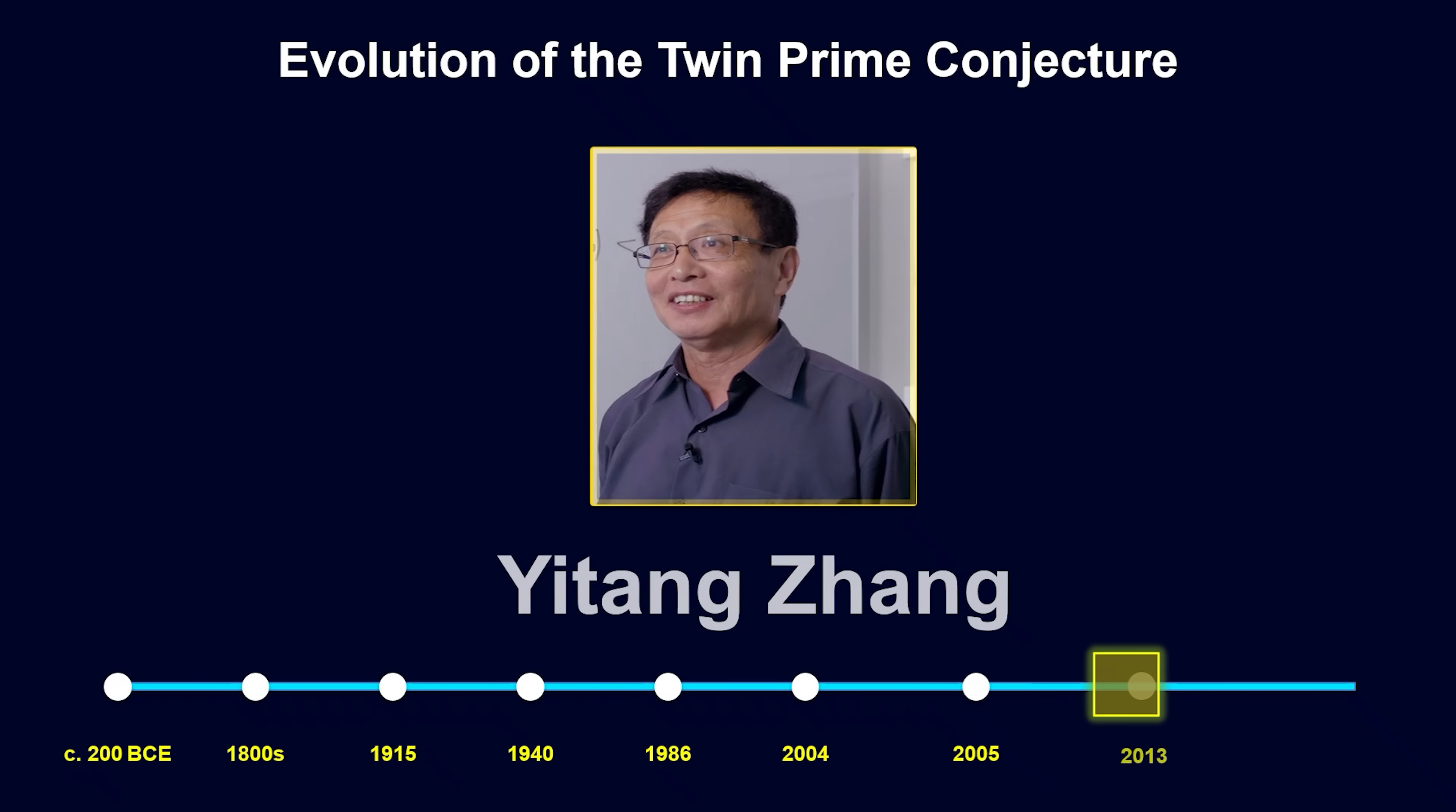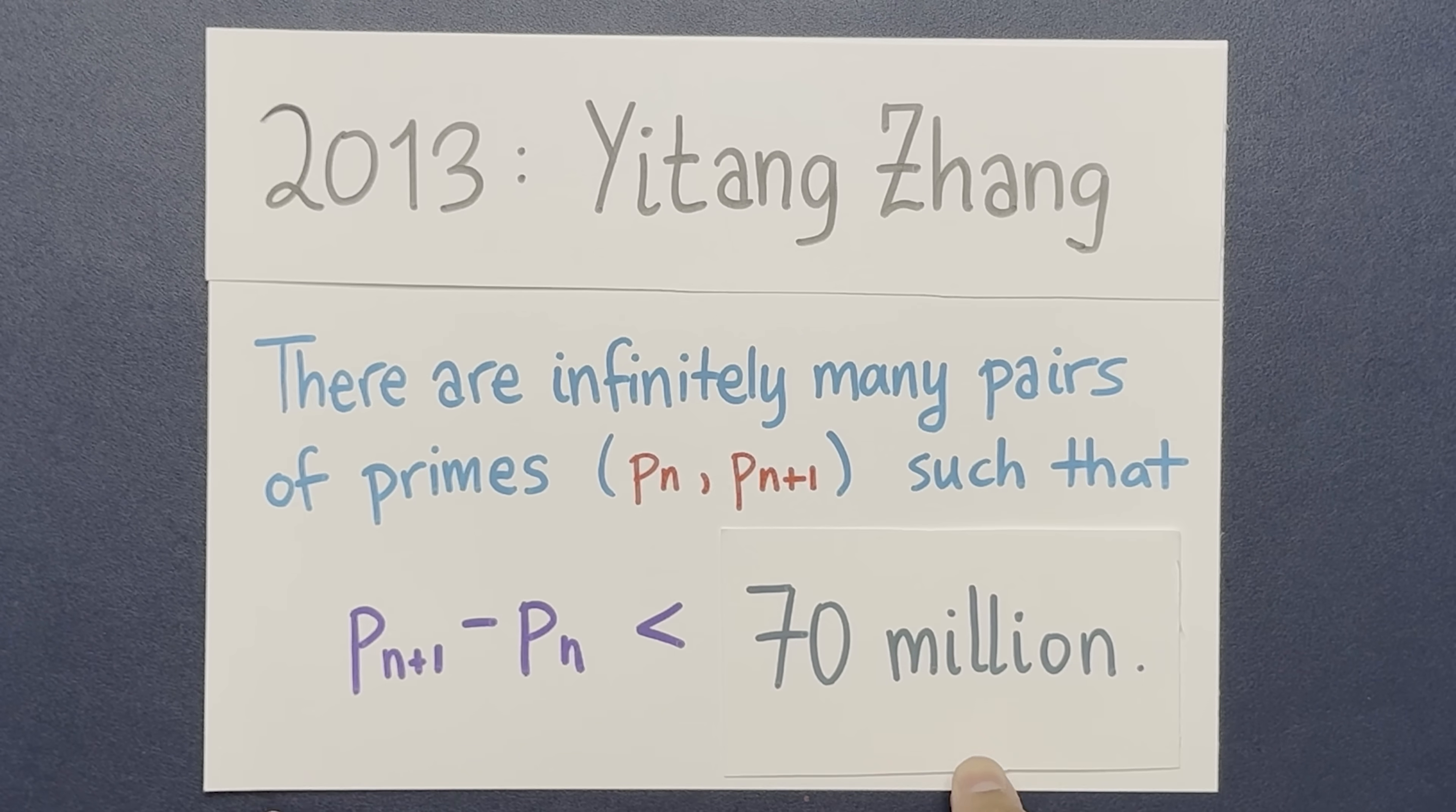But 10 years later, Yitang Zhang made a stunning breakthrough. He brought the gap down to 70 million. Yitang Zhang showed that there are infinitely many primes p such that at least one of the following 70 million integers is also a prime number. This was absolutely amazing. GPY showed that you could bring gaps between primes arbitrarily small compared to the average. But Yitang Zhang was able to bring the number down to a concrete number for the first time. 70 million. This was completely unprecedented.